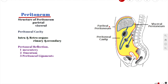First, we'll give an introduction to the peritoneum, then we'll talk about the structure and the two layers, the peritoneal cavity, the organs that are intra- and retroperitoneal, and in the final phase, we'll talk about the peritoneal reflections — that is your mesentery, omentum, and your peritoneal ligaments.